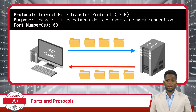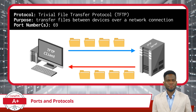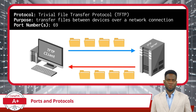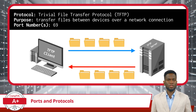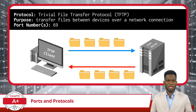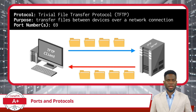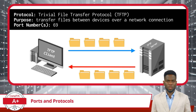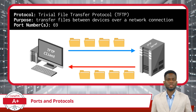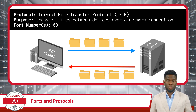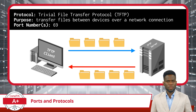Another protocol worth mentioning is TFTP, or Trivial File Transfer Protocol. TFTP is a simpler, more lightweight version of FTP, commonly used for transferring small files or booting network devices. One key characteristic is that it operates without guaranteed data packet delivery, making it faster but less reliable than FTP. TFTP uses port 69 for transferring data. Like FTP, TFTP lacks security features — it doesn't offer authentication or encryption, leaving data vulnerable to interception.